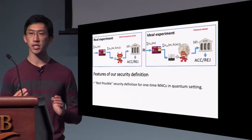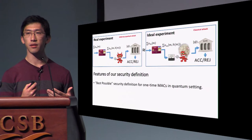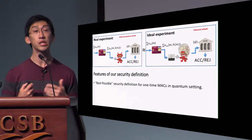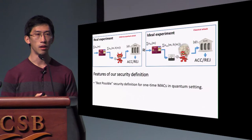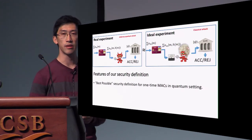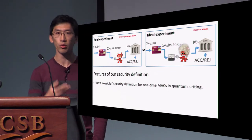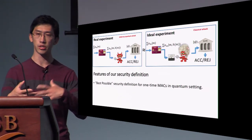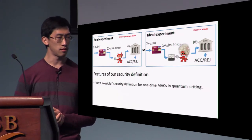In some sense, this is the best possible security definition for one-time MACs in the quantum setting. The adversary can always measure the superposition and pass on the classical outcome—this will never be detected by the receiver, since the receiver just checks that the message-tag pair is consistent. You can never rule such an attack out. What we're saying is that measuring and acting on the classical outcome is the only type of operation the adversary can do—it gets this classical outcome and does some processing on the message and its own private space.